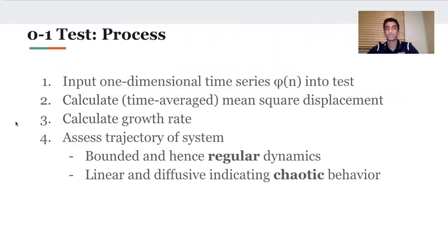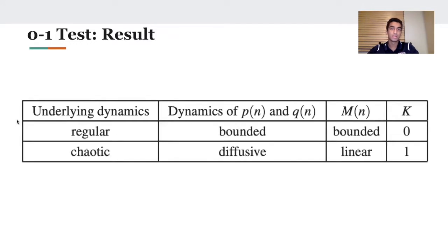So the process: You input your one-dimensional time series into the test. You calculate a time average mean squared displacement. From this you calculate your growth rate. From this you'll get a value of k, which tells you if your system is bounded and hence regular dynamics, or linear and diffusive, indicating chaotic behavior. You can either get a k value of zero or close to zero, or a k value of one, which indicates that the underlying dynamics are chaotic.